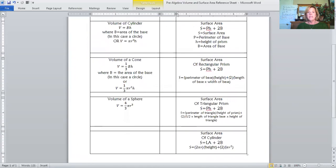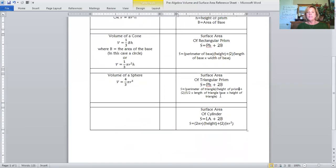Then surface area of a triangular prism, same formula, but the perimeter is not of a rectangle but of the triangle. So perimeter of the triangle times the height of the prism plus, don't forget that plus, 2 times one half times the length of the triangle base times the height of the triangle.